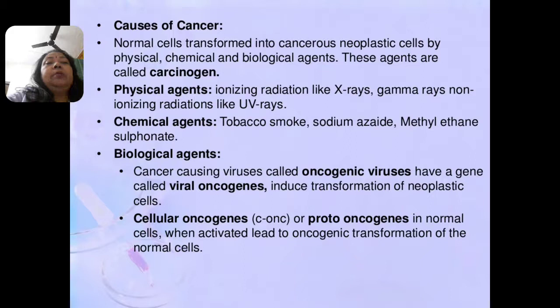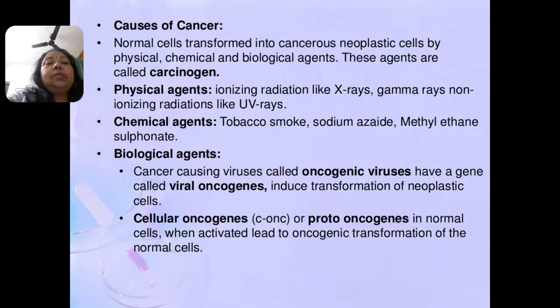The causes of cancer: normal cells transform into cancerous neoplastic cells by physical agents, chemical agents, and biological agents — collectively known as carcinogens. Physical agents include X-rays, gamma rays, and non-ionizing radiations like ultraviolet rays. Chemical agents include tobacco smoke, sodium azide, dimethyl ethane sulfonates, etc. Biological agents include viruses; cancer-causing viruses are known as oncogenic viruses.